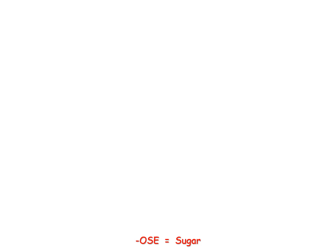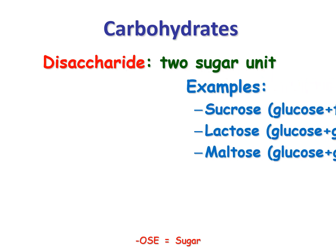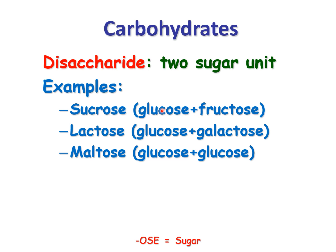Here are some common disaccharides. By the way, if you see a suffix -ose, think sugar. Glucose, fructose, galactose, lactose, sucrose — they're all sugars, and they're disaccharides formed by two monosaccharides. Sucrose is glucose and fructose. Lactose is glucose and galactose.